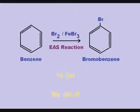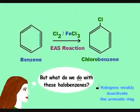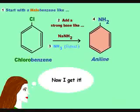Listen: make a bromobenzene — add Br2 and FeBr3. Or add chlorine, Cl in place of bromine. Their EAS reactions start out with a halobenzene. Add a strong base like sodium amide. The solvent is liquid ammonia — voilà, voilà, it's aniline!